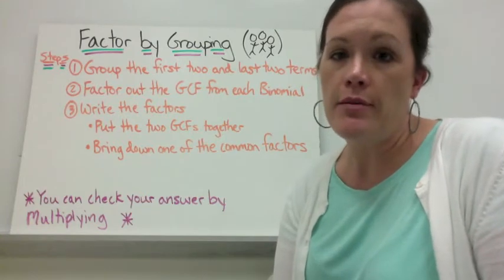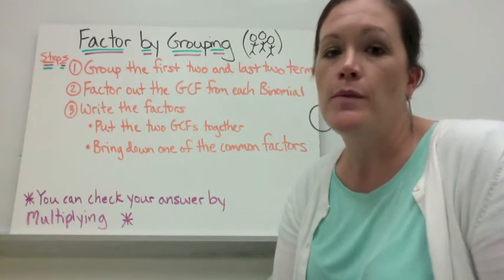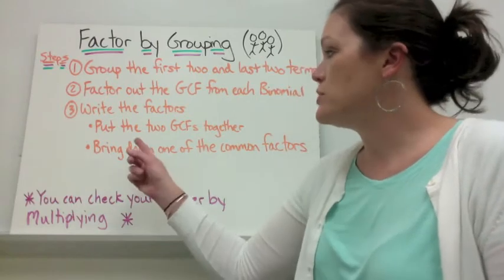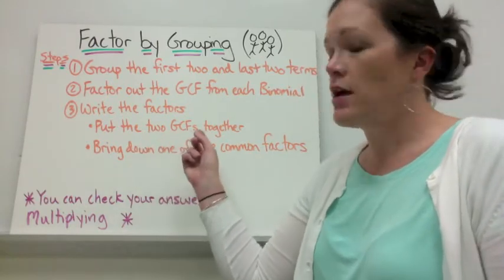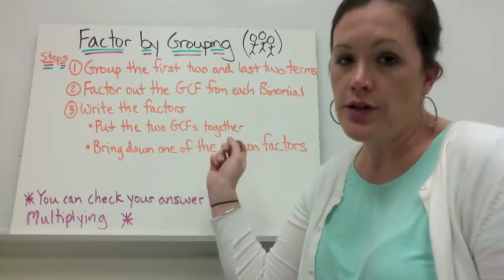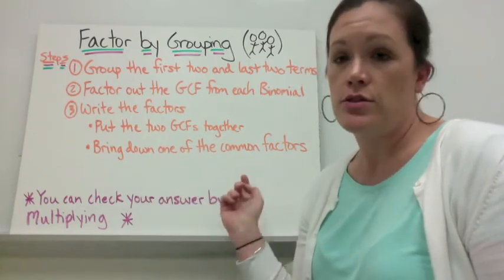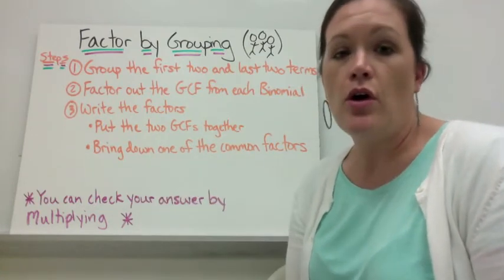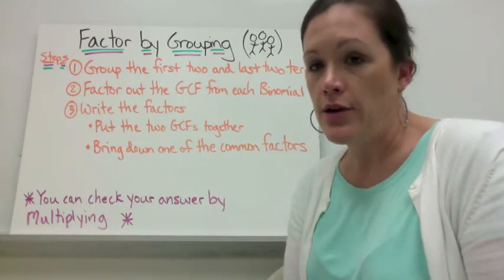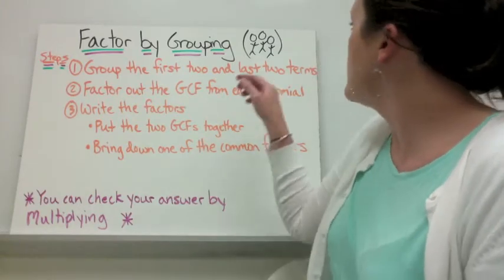Then take out the greatest common factor from each binomial and then write out your factors. You're going to put the two greatest common factors that you took out together as one factor, and then you're going to bring down one of the common factors. You can always check your answer by multiplying it back together again to see if you get the polynomial that you started with.